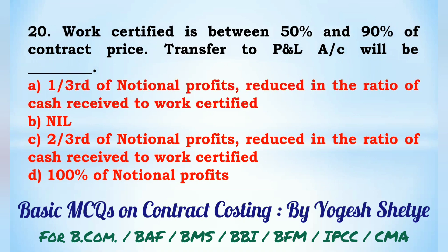Question 20: When work certified is between 50% and 90% of the contract price, the transfer to profit and loss account will be — (A) 1/3rd of notional profit reduced in the ratio of cash received to work certified, (B) 2/3rd of notional profit reduced in the ratio of cash received to work certified, (C) 100% of notional profit. Answer: B — 2/3rd of notional profit reduced in the ratio of cash received to work certified.